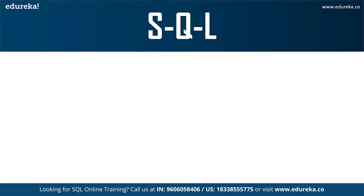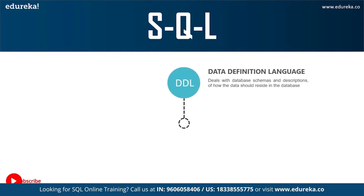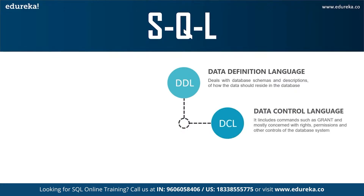The different subsets of SQL commands are as follows. First, DDL — Data Definition Language. It deals with the description of the database schema and is used to create and modify the structure of database objects. It allows you to perform operations such as CREATE, ALTER, and DELETE on database objects. DDL is very popular and extensively used compared to other commands.